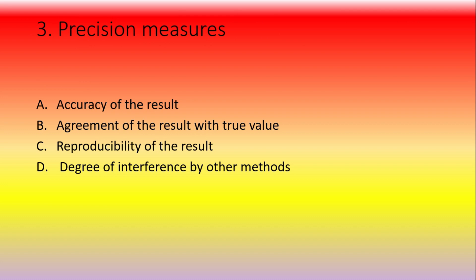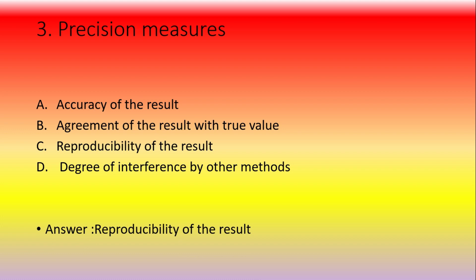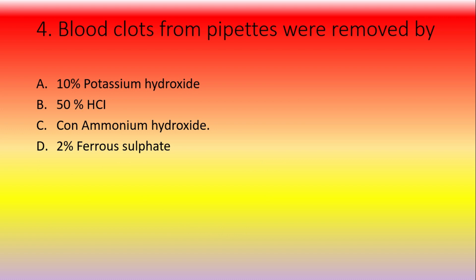Precision measures — option A: accuracy of the result, option B: agreement of result with the true value, option C: reproducibility of the result, option D: degree of interference by other methods. The answer is reproducibility of the result. Accuracy means agreement with the true value, and degree of interference by other methods measures specificity.